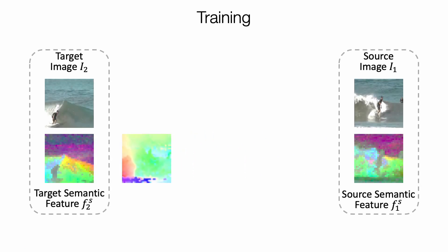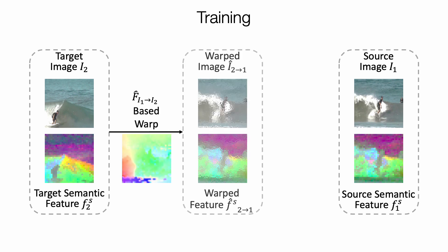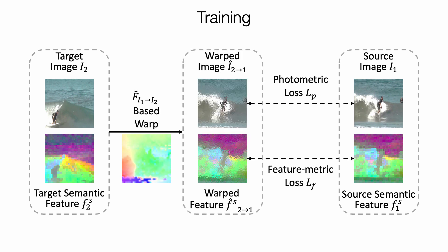During training, we warp the target image and semantic features using the estimated flow, and minimize the distance between the warped targets and the corresponding sources. Warping-based loss provides fine-grained supervisory signals to train our network. Combined with semantic-aware flow prediction, we are able to achieve robust and fine-grained correspondence.